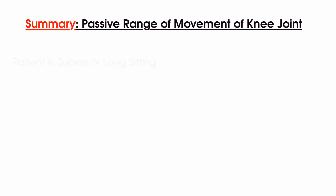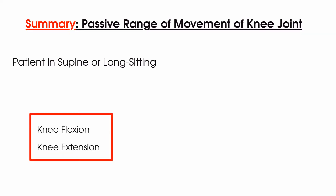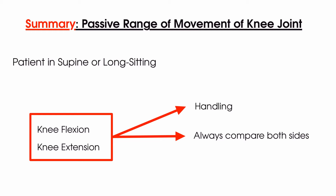So let's summarize this video on passive range of movement of the knee joint. Complete your passive range of movement testing with your patient in a supine or long sitting position. When completing your passive flexion and extension tests, be aware of your handling for each movement and make sure to compare the affected and unaffected sides. When completing your testing, make a note of pain, range, and end feel. In practice, you would now take your patient's active range of movement findings and compare that to the passive range of movement findings, which will allow you to make a decision as to whether it's most likely to be contractile or non-contractile structures which are at fault for their condition. You can also use your other tests in order to clarify their diagnosis.